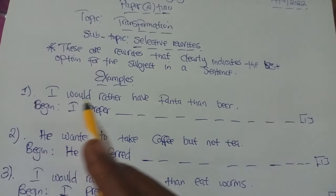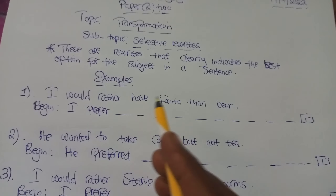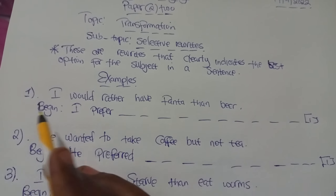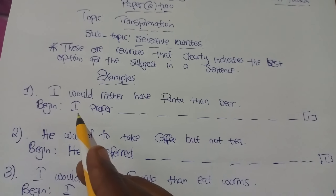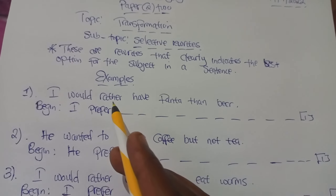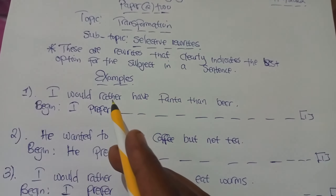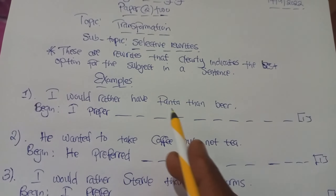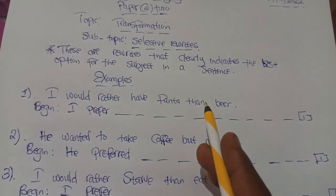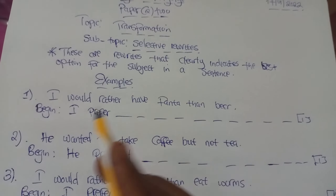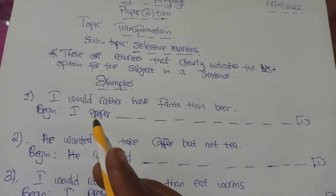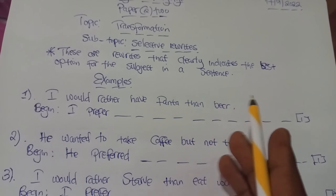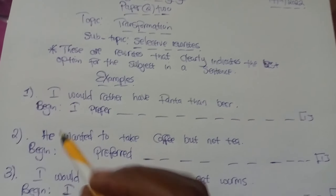So, 'I would rather have Fanta than beer.' Begin: 'I prefer.' We can see that 'rather' goes together with 'than,' while 'prefer' must go together with 'to.'